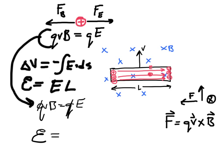And so the EMF here is going to be, let's see, this E goes there, and so that's VB times L, VBL.